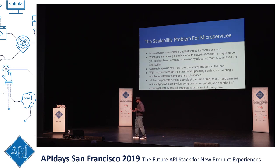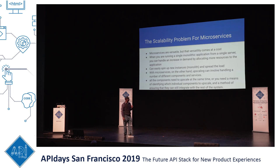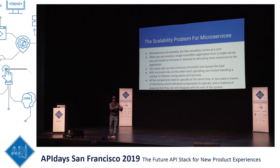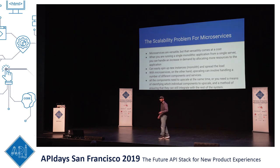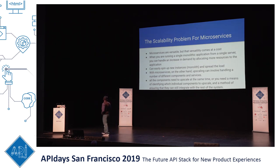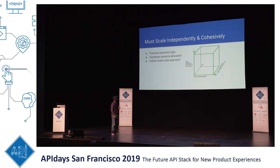When you have microservices, your scaling has to be both independent and cohesive. You have to know which parts of your microservice are going to need the most resource allocation for scaling up that specific microservice. Not all your microservices will need to scale up or down at the same time. However, those that do need to scale require a means of identifying which individual components to upscale, and a method to ensure they can still integrate with the rest of the system before, during, and after scaling. You must scale both independently and cohesively, and in order to do that, you must prioritize your business logic.